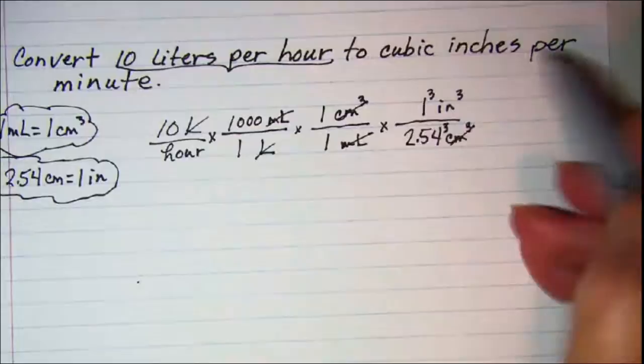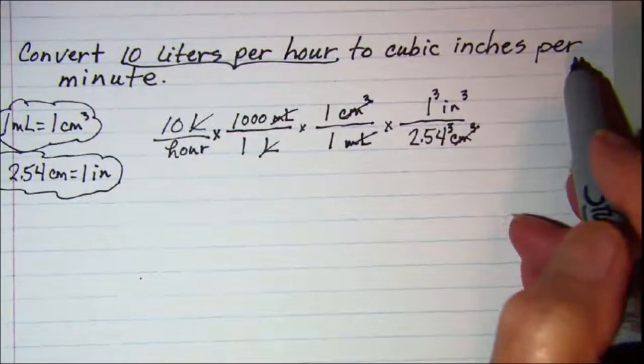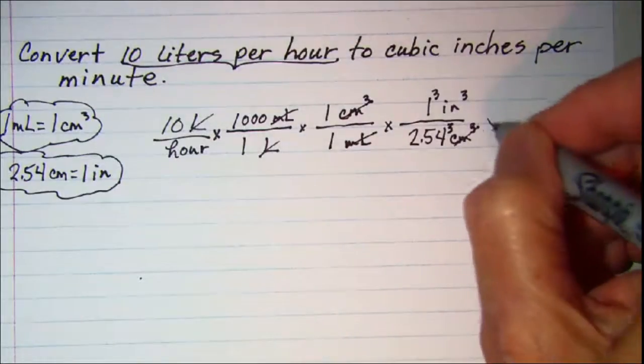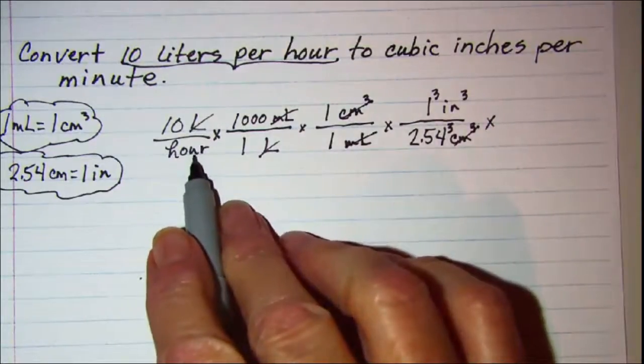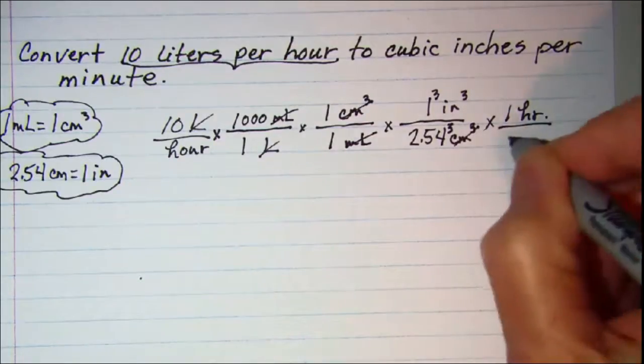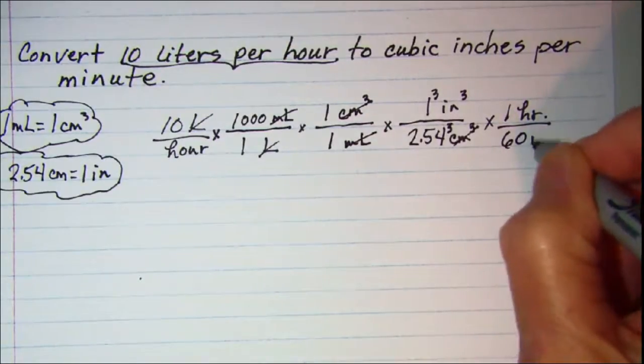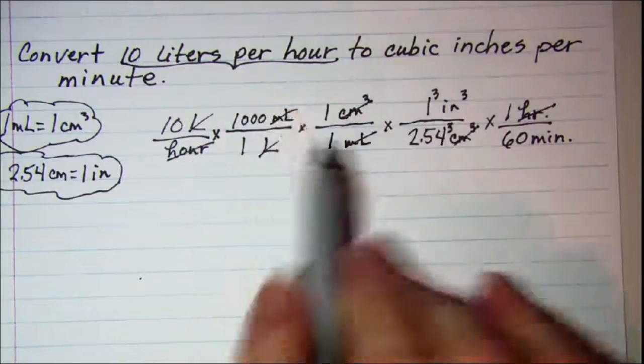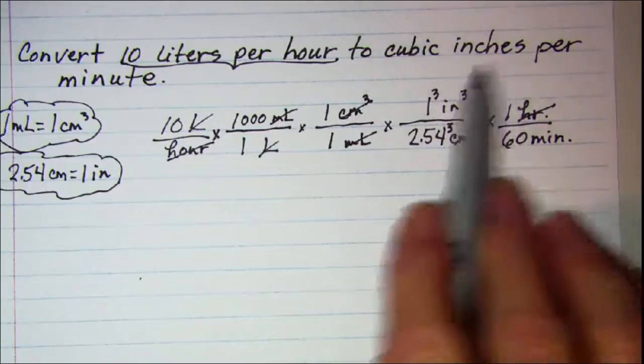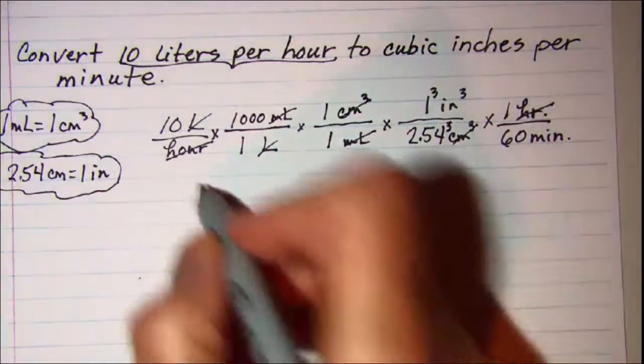The only other thing I need to do, since I'm going from hours to minutes, is convert this unit hours, so 1 hour is 60 minutes. These will cancel, and now I have cubic inches per minute, which is what I want, so I'm ready to write my answer.